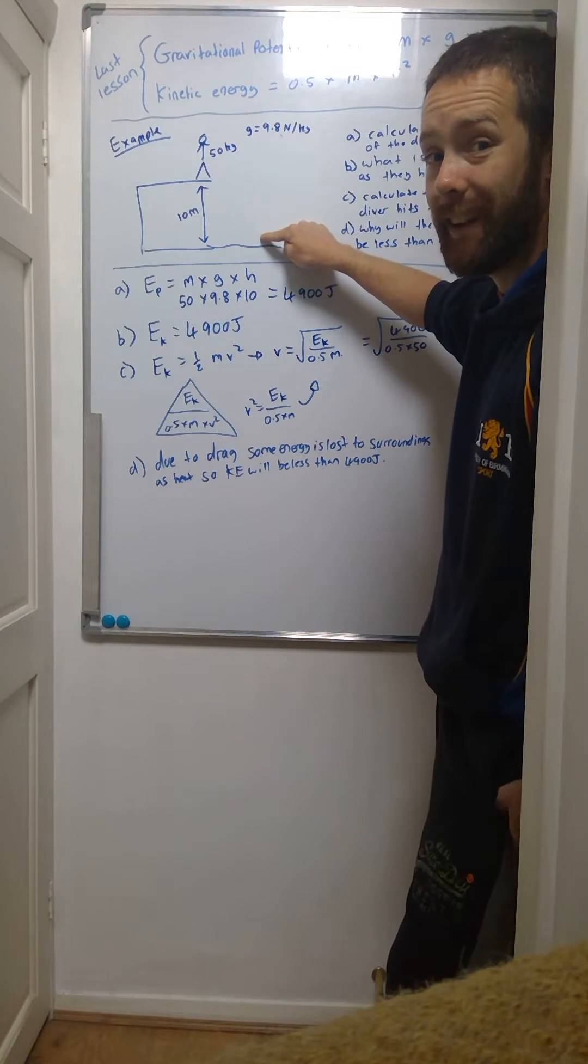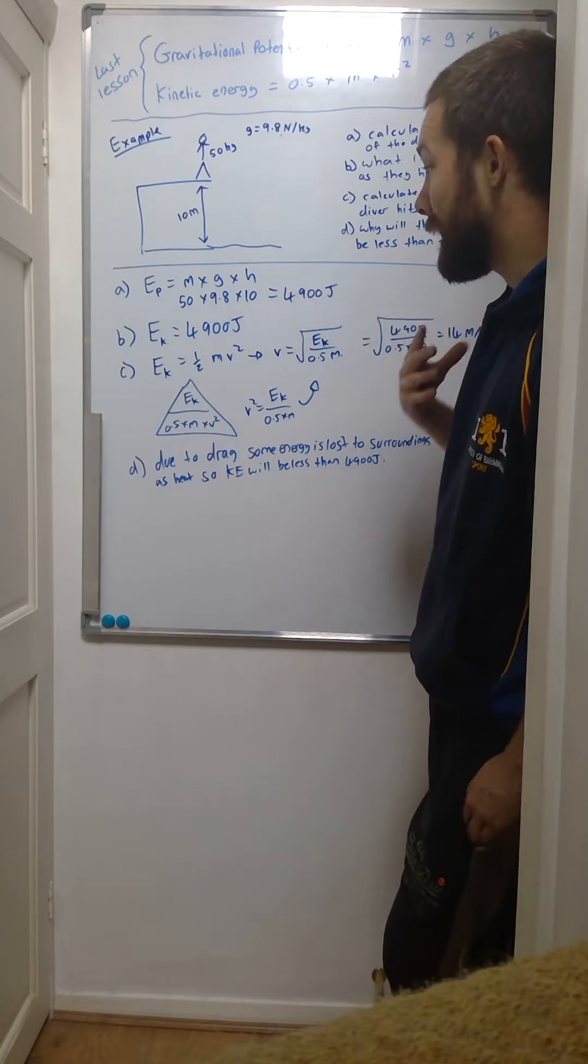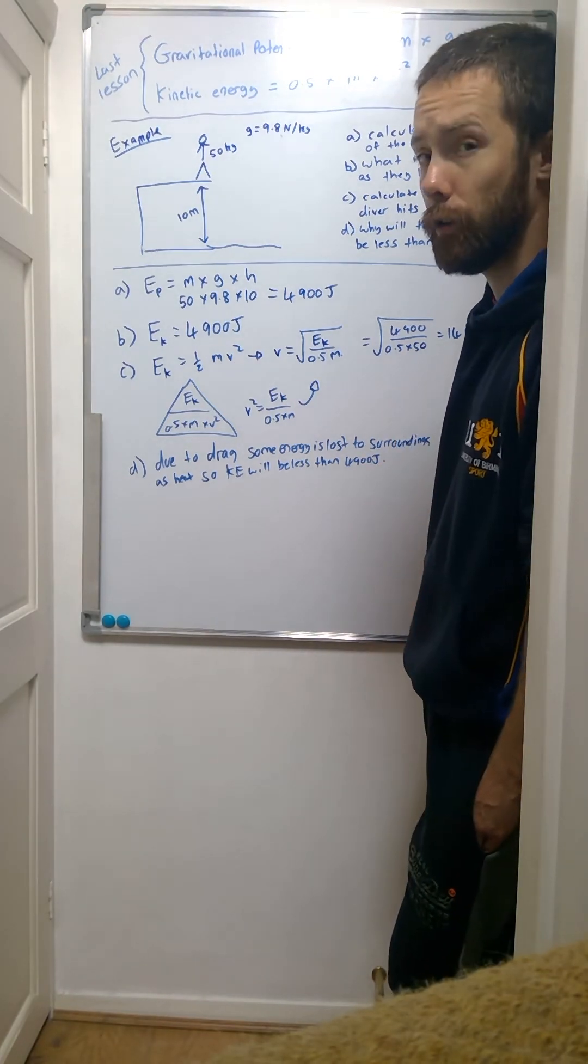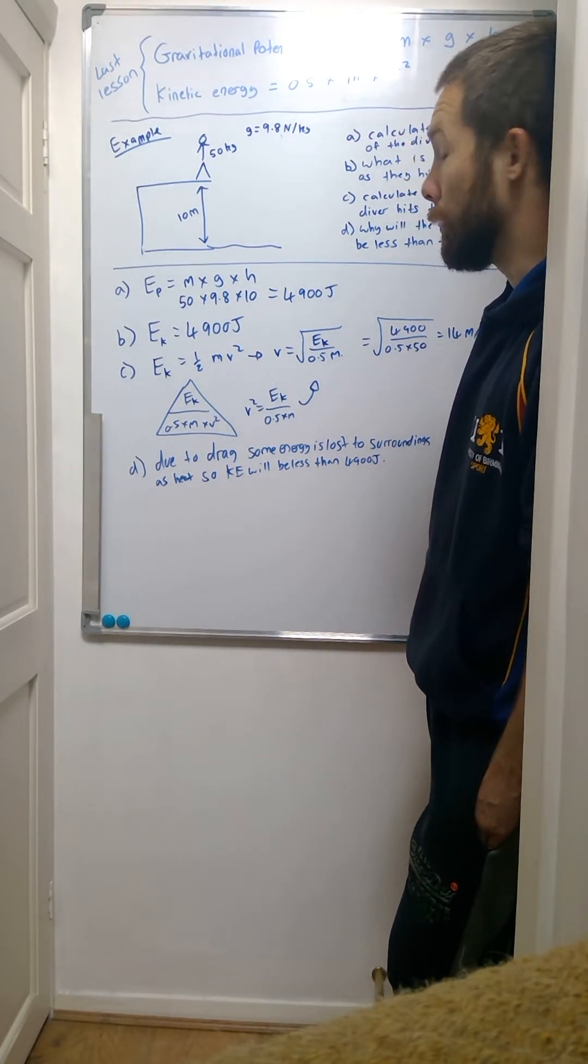So the answer is the same as your previous answer. It's just that the diver is going to have 4,900 joules of kinetic energy at the bottom as they hit the water.